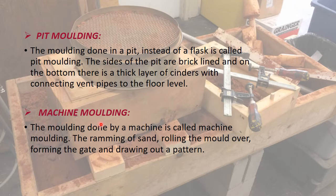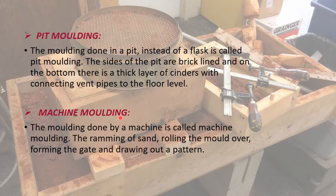Molding machines produce identical and consistent castings, and they produce castings of better quality at lower cost. This is the reason machine molding is most commonly used for heavy and extremely large castings. We have now discussed the different types of molds according to the methods used in making them.